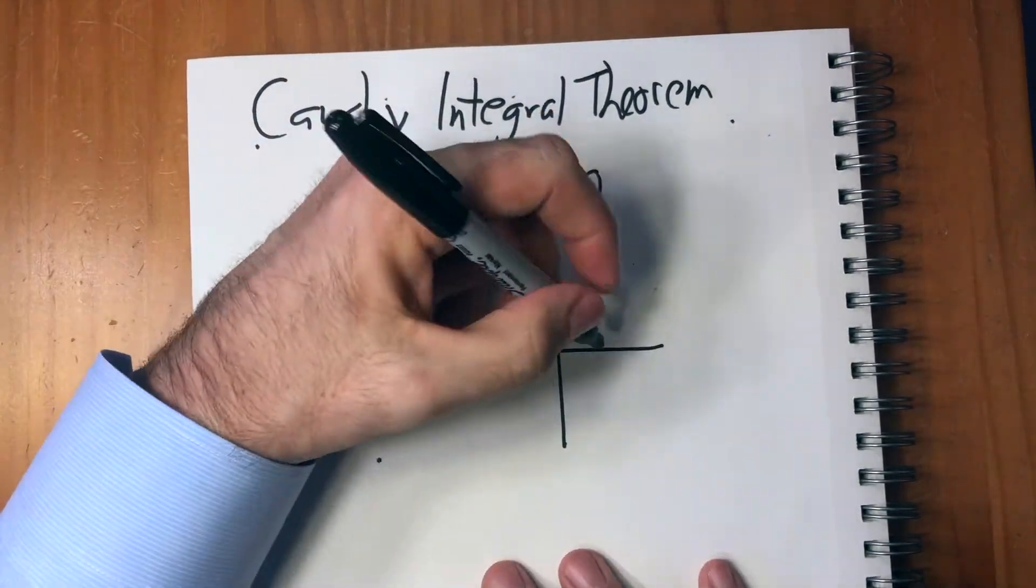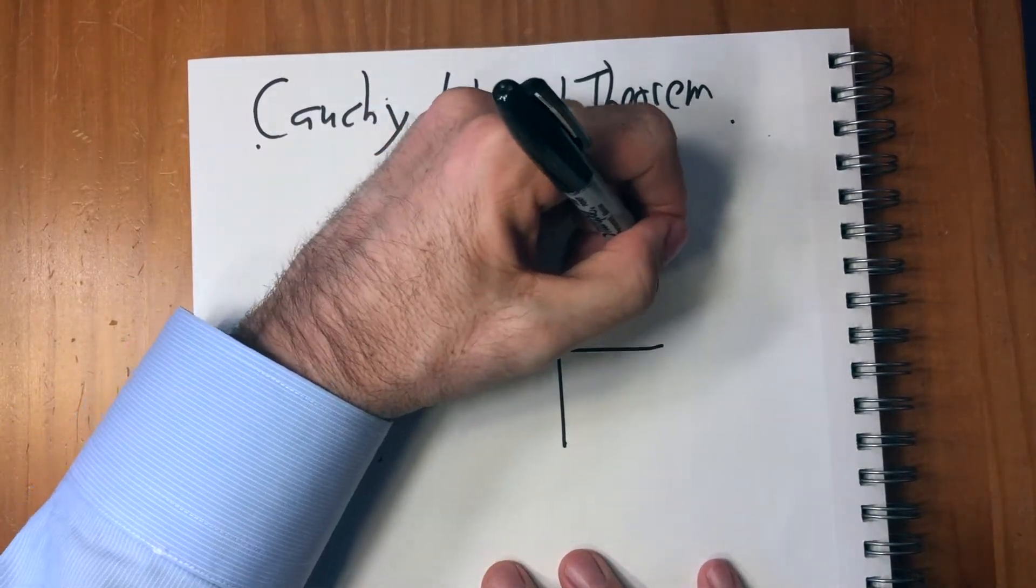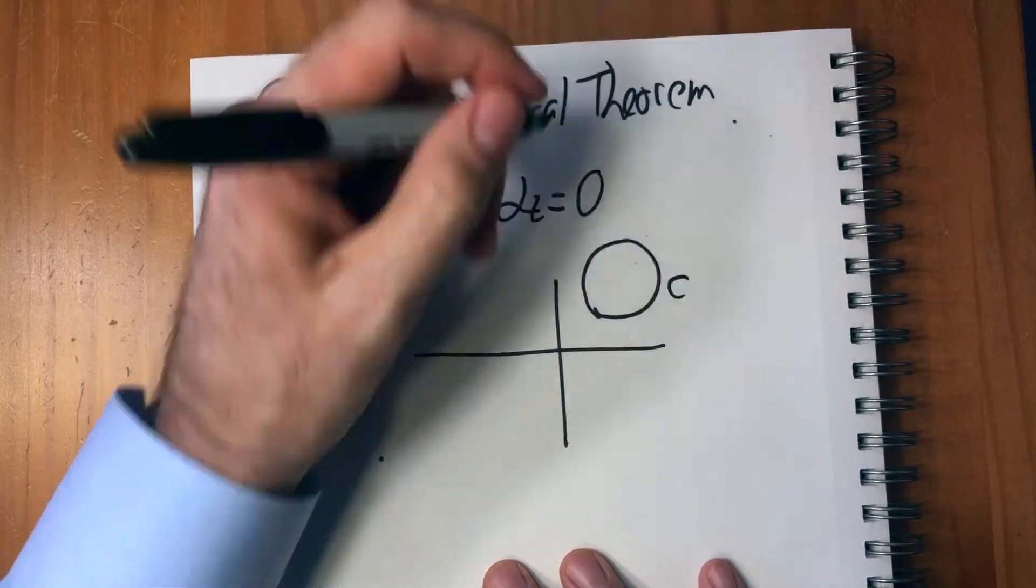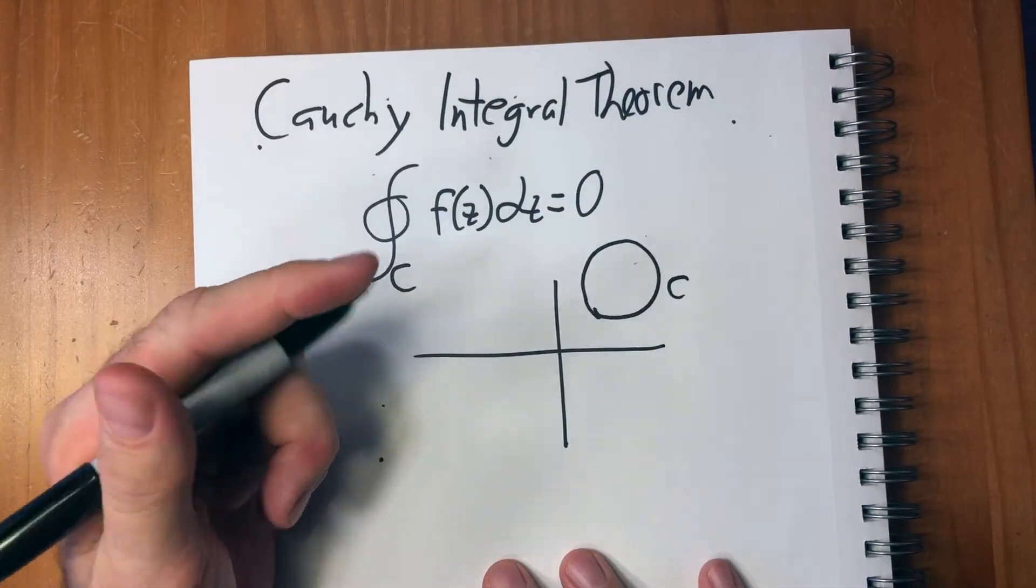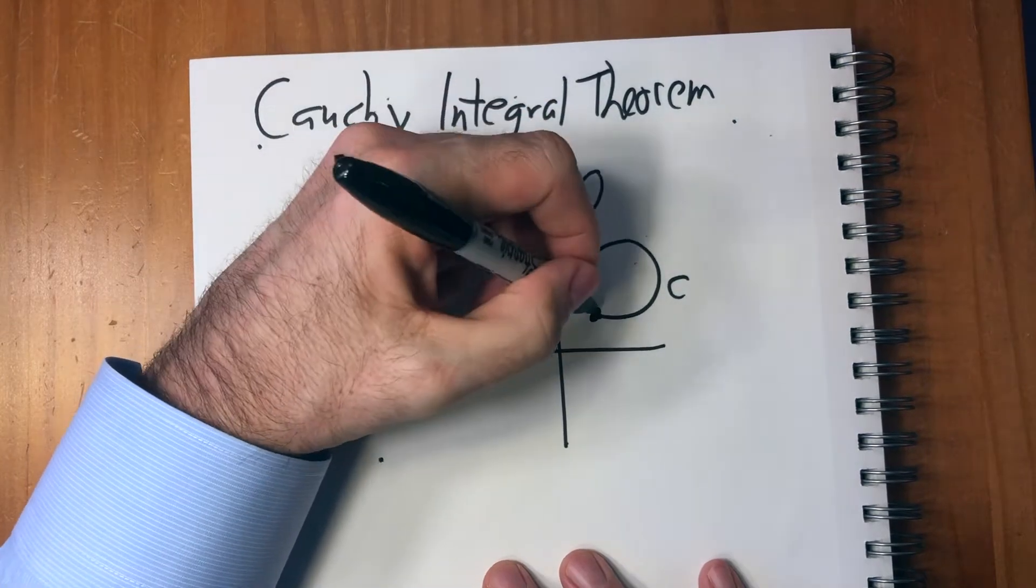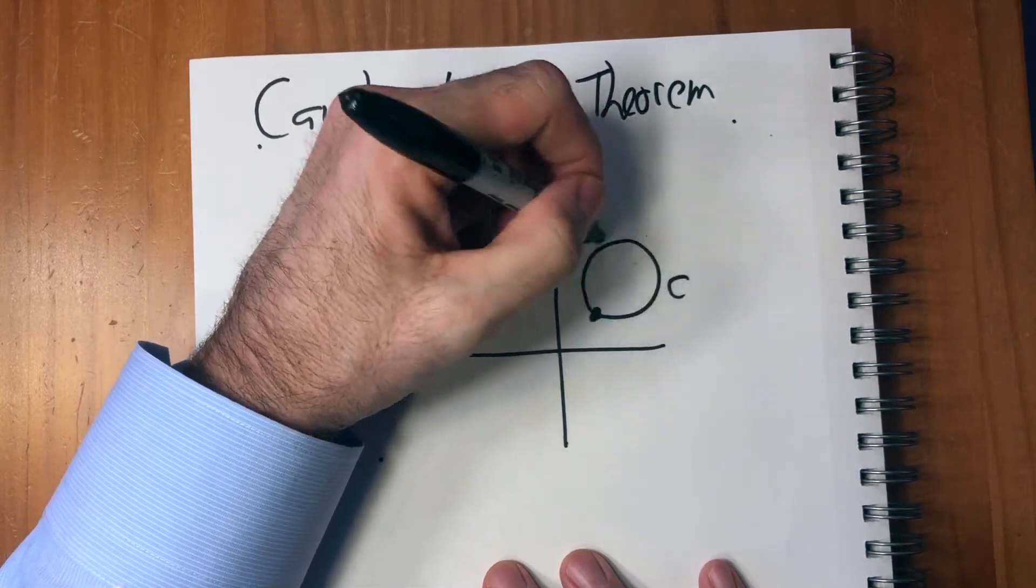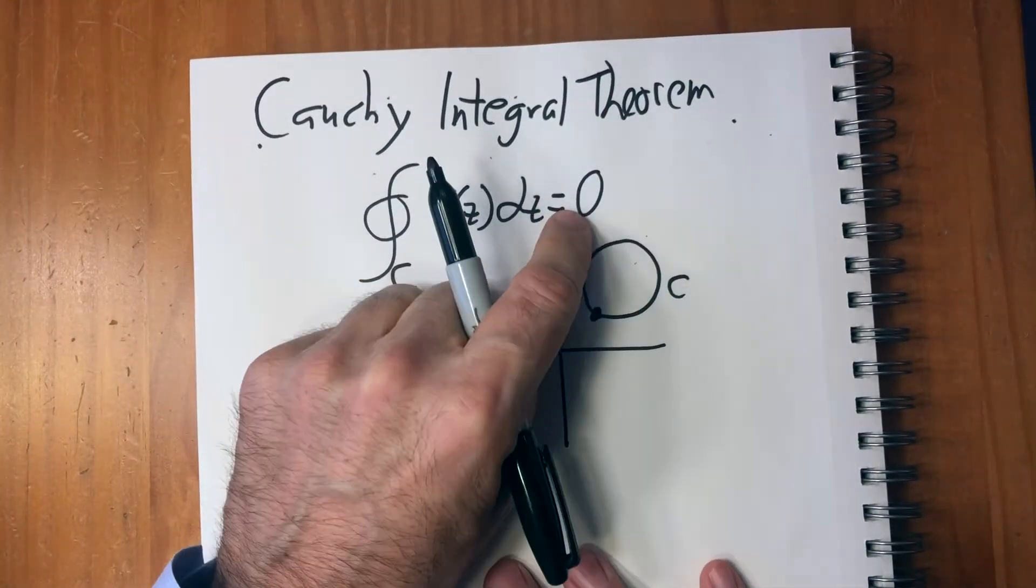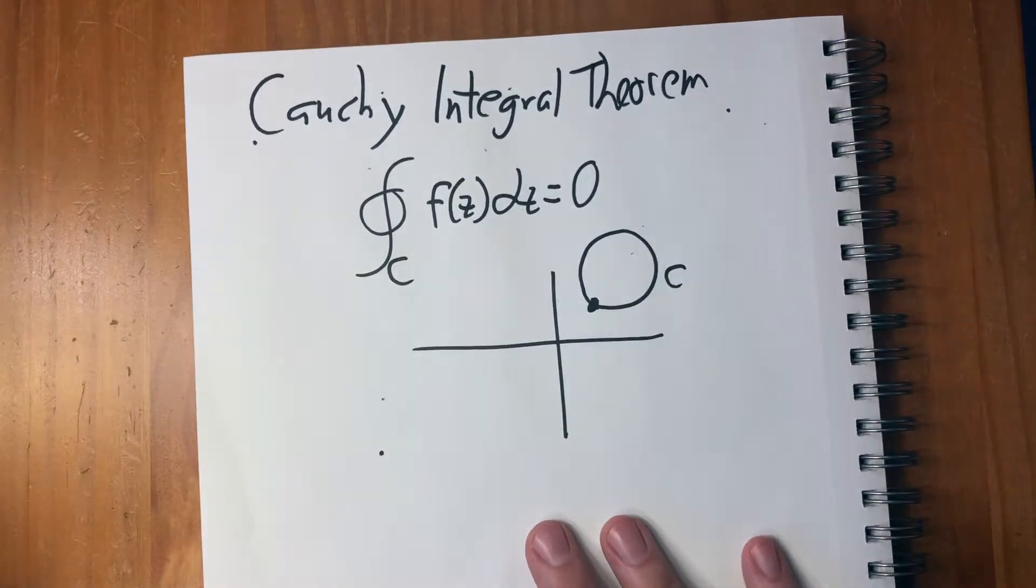It means that if you have a function in the complex plane and this is C, it goes around in a circle, then this integral starting and ending in the same place, if this is... Oh, there's something I never mentioned.